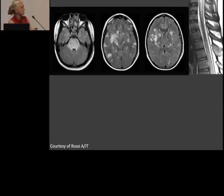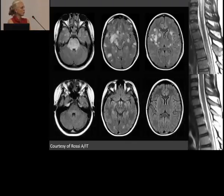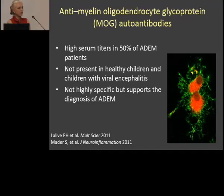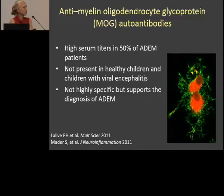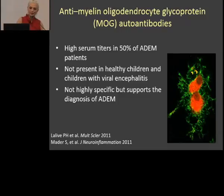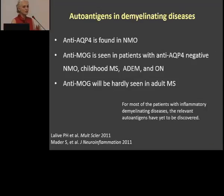This case from Andrea Rossi shows diffuse pons involvement, multiple lesions, lesions in the basal ganglia, and lesions in the spinal cord — which completely regressed and the patient is doing very well. There is also a test for ADEM: anti-MOG. Unfortunately it is not very highly specific — only 50% of children with ADEM will be positive. But it's important because viral encephalitis is negative for anti-MOG, making it one supportive factor when you're deciding between ADEM and encephalitis.